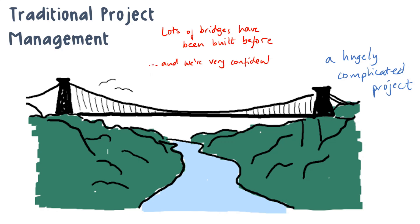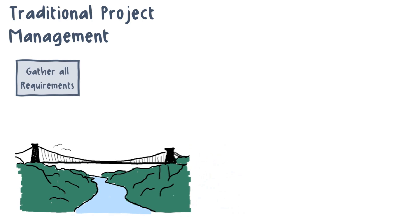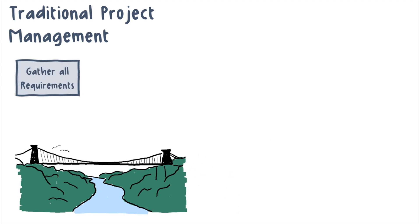We're also very confident that we do actually need a bridge. So there are things we do know even before the project starts — we have a very tangible, physical thing that we're producing; it's industrial work. For this kind of project, we will spend considerable time up front gathering requirements for our bridge — a complete list of what we need the end result to achieve: how many lanes, what traffic capacity it needs to support, whether we need pedestrian access, and a million other things.